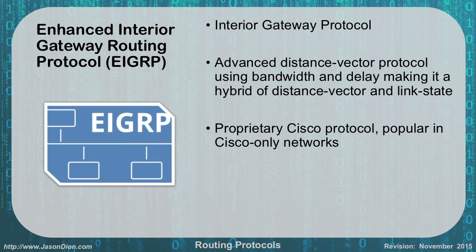Then there is the Enhanced Interior Gateway Routing Protocol, EIGRP. It is another interior gateway protocol that uses advanced distance vectoring with bandwidth and delay as metrics, making it a hybrid of distance vector and link state. They took some features from RIP and some from OSPF to create EIGRP. It is a proprietary Cisco protocol, so it's popular in Cisco-only networks. If you're using non-Cisco devices or a hybrid network without Cisco to translate, you won't be able to use it. People with a lot of non-Cisco gear tend to stay away from EIGRP and just use OSPF instead.